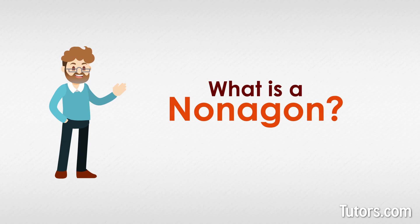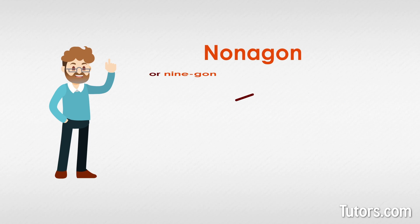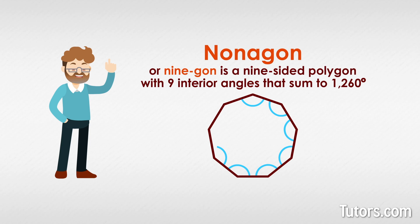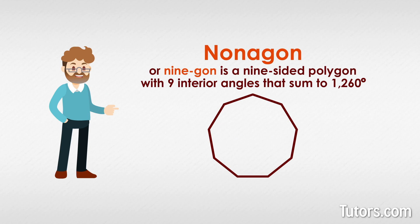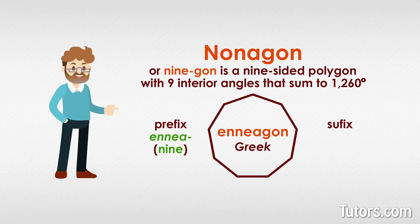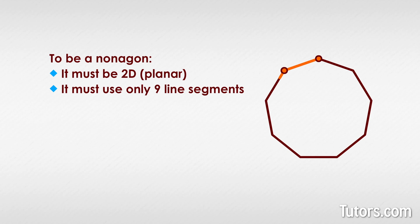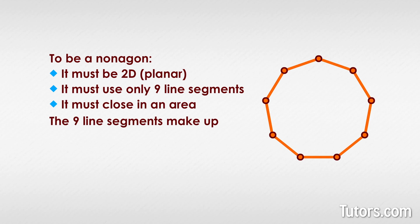A nonagon, or nine-gon, is a nine-sided polygon with nine interior angles that sum to 1260 degrees. Another word for nonagon is enneagon, which has Greek roots: the prefix 'ennea' meaning nine and the suffix 'gon' meaning angled. To be a nonagon, the shape must be two-dimensional and must only use nine line segments to close in an area. Those nine line segments make up the nonagon's nine sides and connect to form its nine angles.